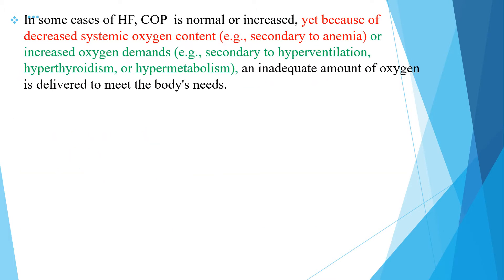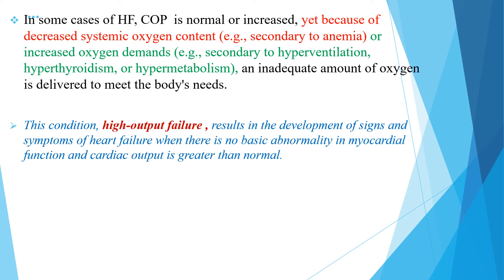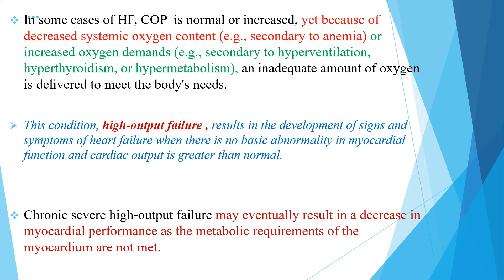In some cases of heart failure, cardiac output is normal or increased, yet because of decreased systemic oxygen content such as secondary to anemia, or increased oxygen demand such as secondary to hyperventilation, hyperthyroidism, or hypermetabolism, an inadequate amount of oxygen is delivered to meet the body's needs. This condition is called high output heart failure, and results in signs and symptoms of heart failure when there is no basic abnormality in myocardial function. Chronic severe high output failure might eventually result in a decrease in myocardial performance as the metabolic requirements of the myocardium are not met.